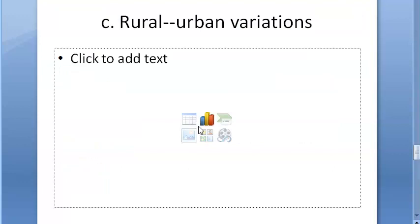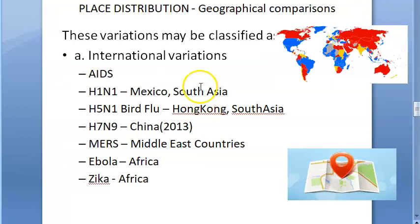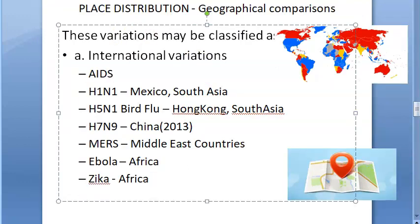By studying the geography of disease, we gain perspective on the fascinating differences in disease patterns between countries and within countries. The world is not uniform — disease patterns vary significantly from place to place.